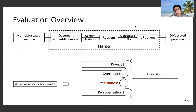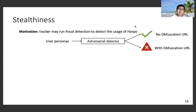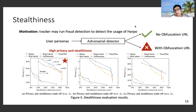Next, we present our stealthiness evaluation results. In real practice, a tracker may run fraud detection to detect the usage of Harpo. Therefore, we train a binary classifier to detect whether a user persona contains obfuscation URLs or not, and use its accuracy to measure stealthiness. Results are presented in Figure 2, where the top-right part means high privacy and stealthiness. Harpo's curve dominates all other baselines, meaning Harpo achieves both higher privacy and higher stealthiness.